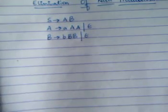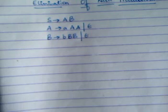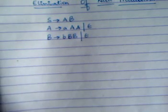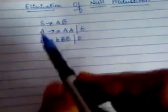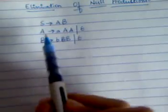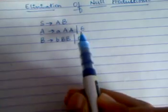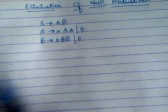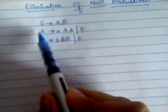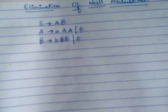B produces terminal b, variable BB, and also null. Whenever we want to eliminate null productions from a grammar, we have to find the variables which are nullable — that means the variables which contain null as a production. Here we can see A has a null production and B also has a null production, so A and B are nullable.